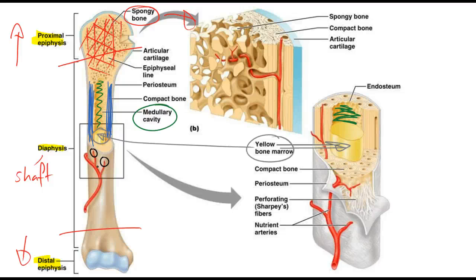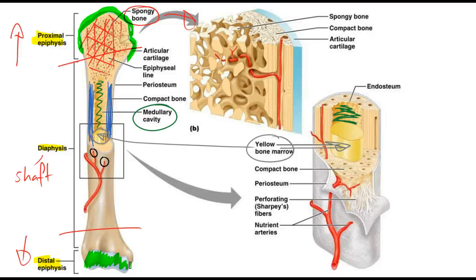We have a couple of other features to look at. We have our articular cartilage, which is at the endpoint of our distal and proximal epiphysis. These are shiny and hard — they help absorb shock, but they also limit friction as two bones move against each other.